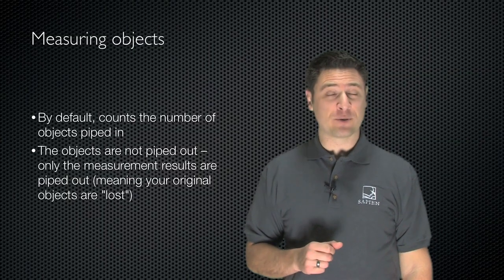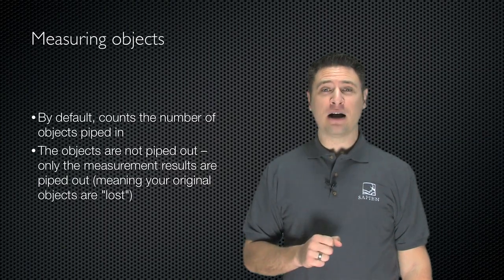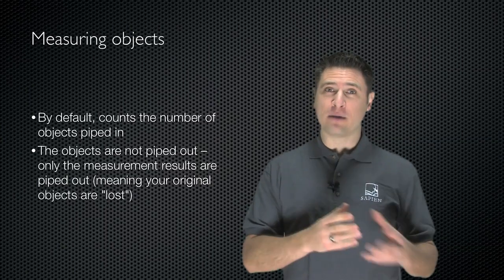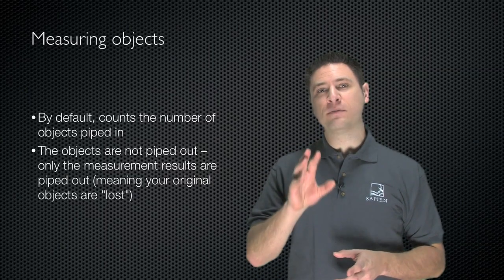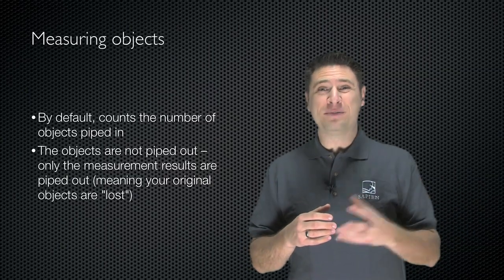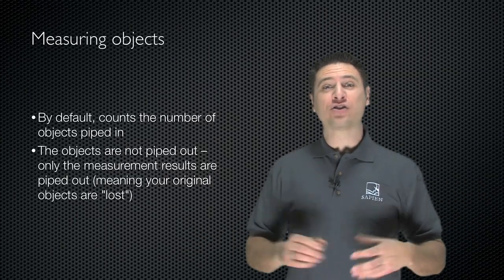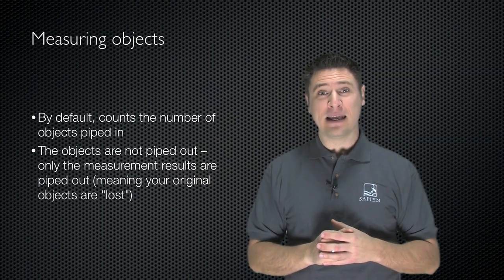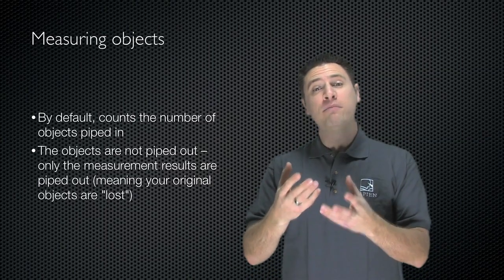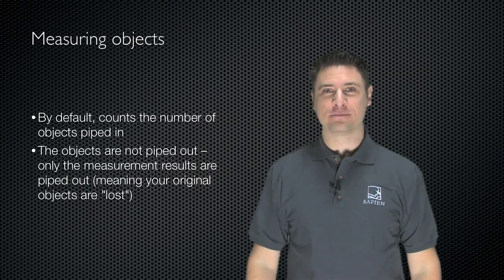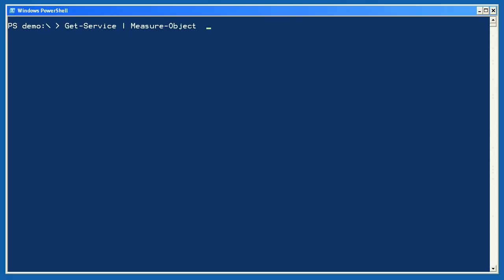You can also measure objects with Windows PowerShell. By default, the Measure-Object cmdlet just counts the number of objects that you pipe into it, but you can also do some other tricks with it. What's important to remember is that whatever objects are piped in are not piped out — Measure-Object consumes the input objects and produces measurement objects on the output side. At its simplest, I get a bunch of services and pipe them to Measure-Object, and it tells me how many there are. Any group of objects can be measured: lines in a text file, event log entries, and so forth.